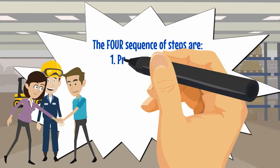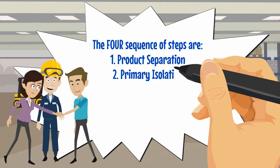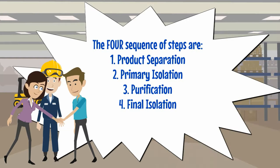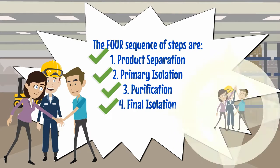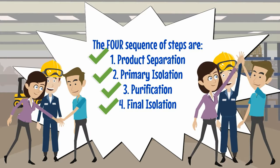Downstream Processing follows four sequence steps: Product Separation, Primary Isolation, Purification, and Final Isolation.